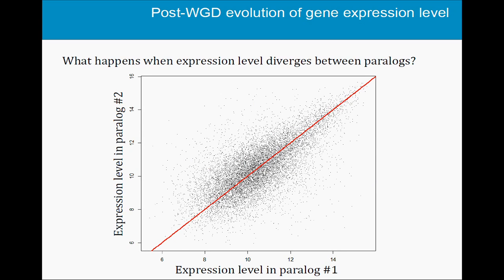The next question I'm interested in is: what happens when the expression level diverges between the paralogues? Remember, the whole genome was duplicated at some point in the lineage of paramecium. So these duplicates were born with the same regulatory regions — the transcription factors, everything is duplicated at the same time — so it's very likely they were born with the same expression level. In this graph, I show the expression level for each pair of paralogues in the paramecium tetraurelia genome: expression level of paralogue 1 versus paralogue 2. If the two copies have the exact same expression level, the points will be on the diagonal. There's still a pretty good correlation, but some start to diverge quite a lot.